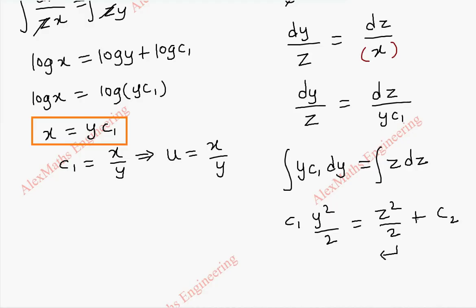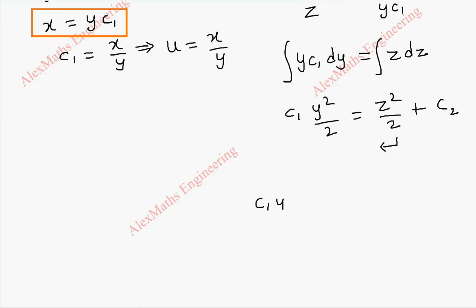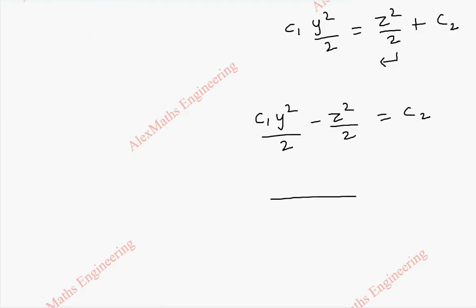Taking this to the other side, we are going to get c1 y square by 2 minus z square by 2 equal to c2. Taking LCM, we get c1 y square minus z square equal to c2. So c1 y square minus z square is equal to 2c2.